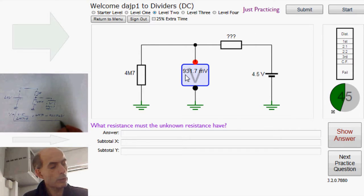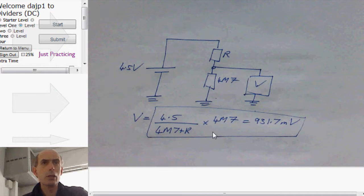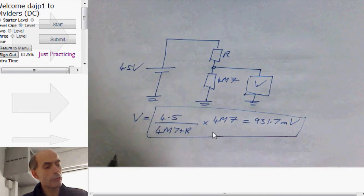So, in that equation there, the only thing that's unknown is this value here, R. We just have to rearrange this equation so that we have an expression for R.